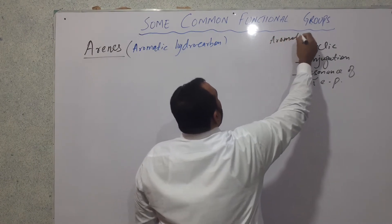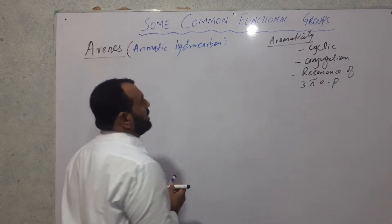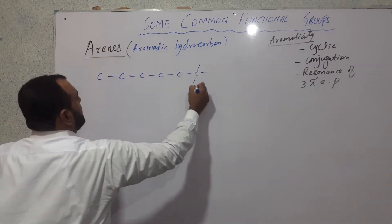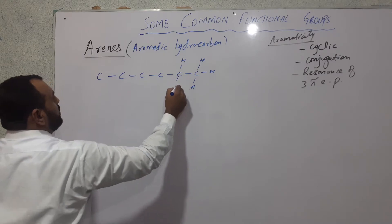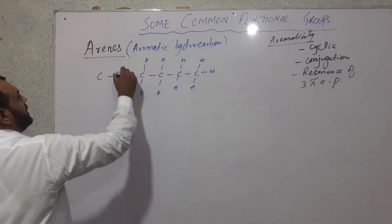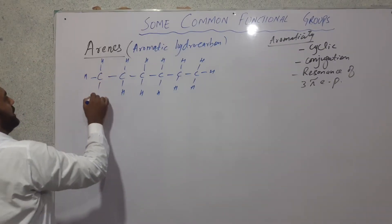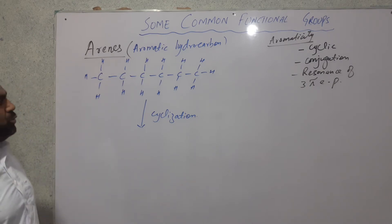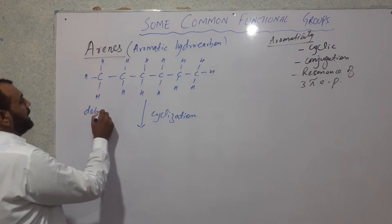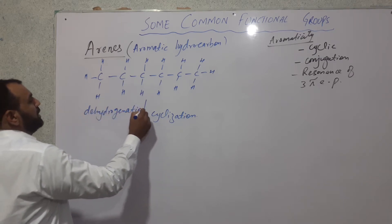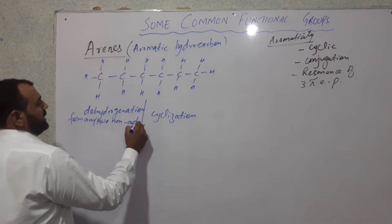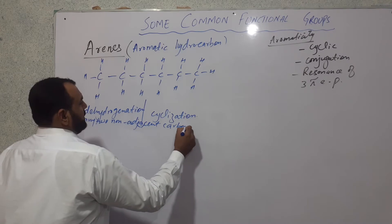We are talking about an open chain hydrocarbon — hexane — with one, two, three, four, five, and six carbon atoms. It is a six-membered open chain compound called hexane. We pass that hydrocarbon through a process called cyclization, in which we convert an open chain hydrocarbon into a closed chain hydrocarbon through dehydrogenation from any two non-adjacent carbon atoms.